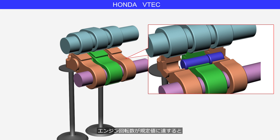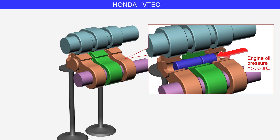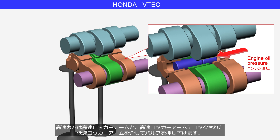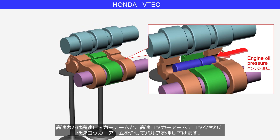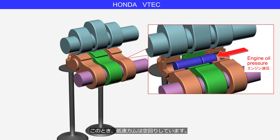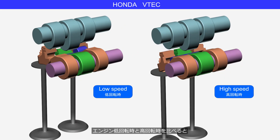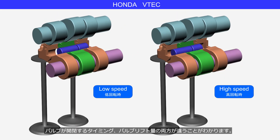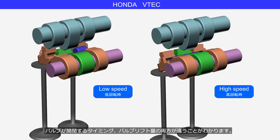When the engine speed reaches the specified value, the engine oil pressure moves the lock pins, locking the low-speed rocker arm and the high-speed rocker arm together. The high-speed cam presses down the valve through the high-speed rocker arm and the low-speed rocker arms that are locked to the high-speed rocker arm. At this time, the low-speed cams idle. Comparing low and high engine speeds, you can see that both the timing of valve opening and closing and the valve lift amount are different.